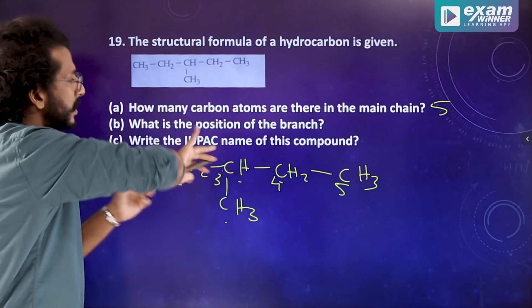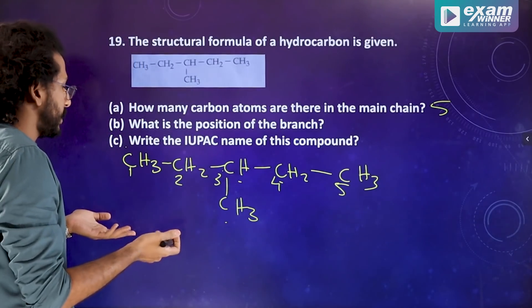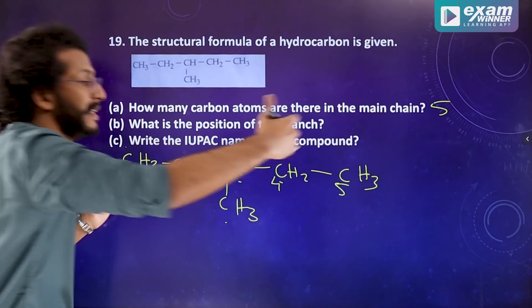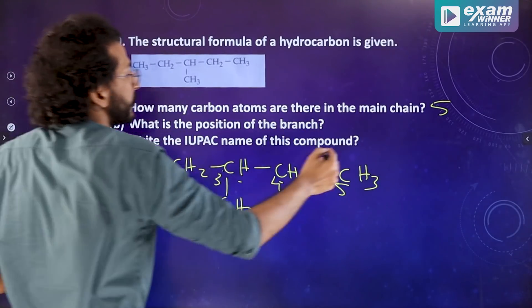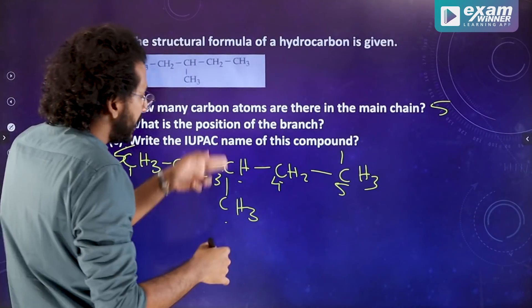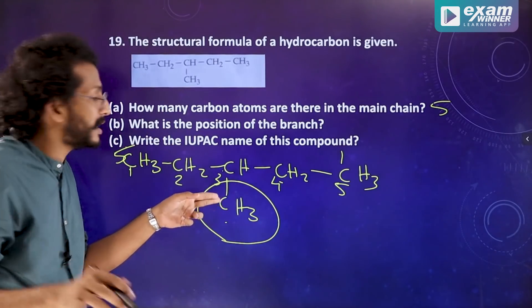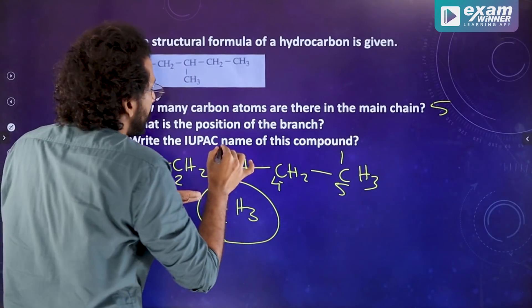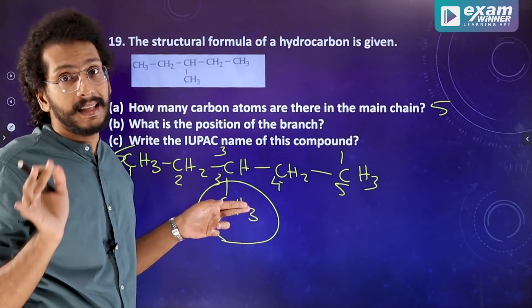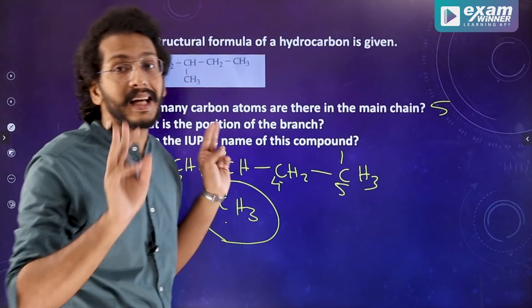What is the position of the branch? We number the main chain 1, 2, 3, 4, 5 and identify where the branch is attached.